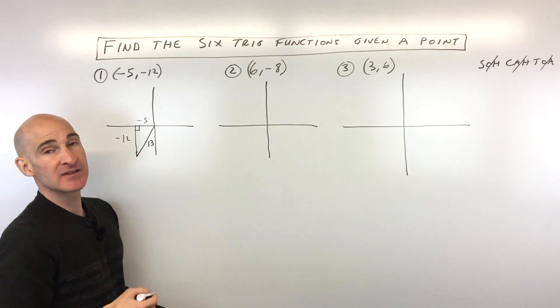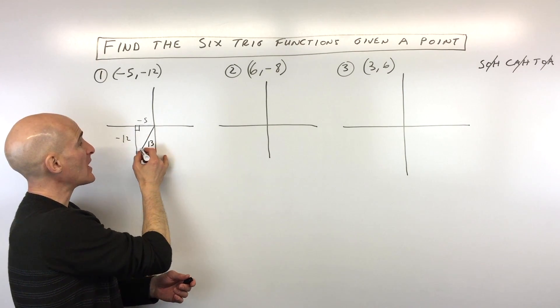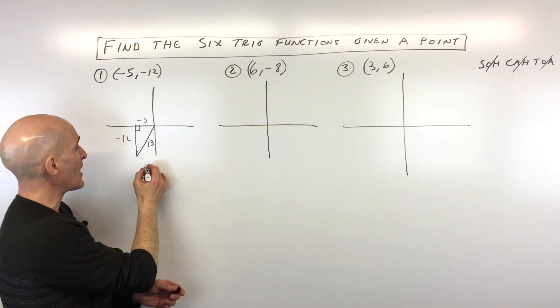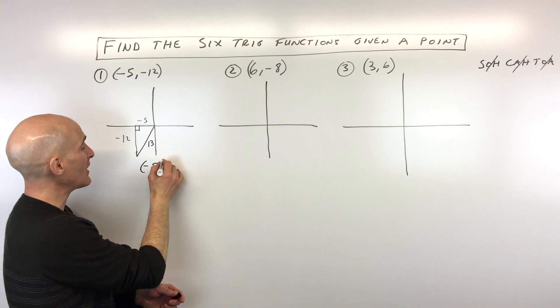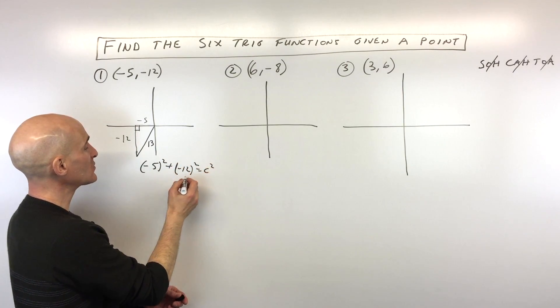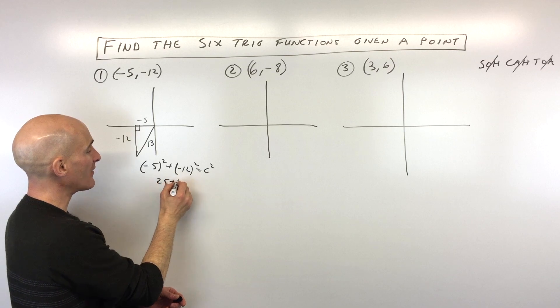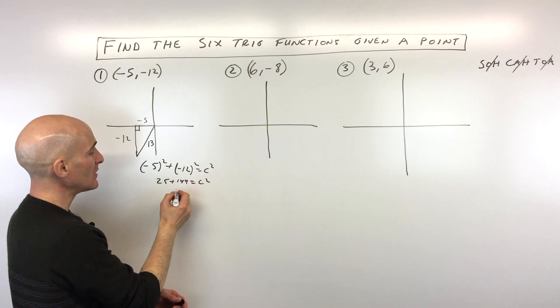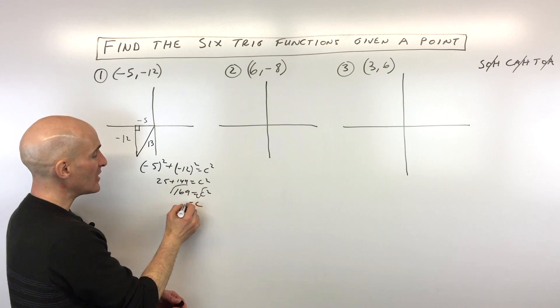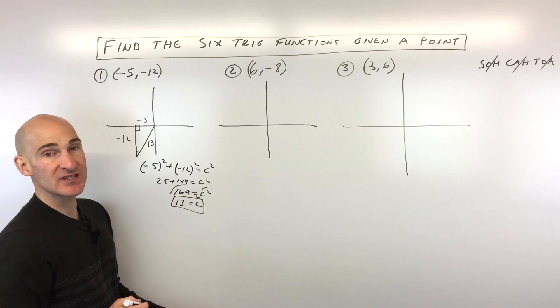Now the hypotenuse here, this radius or ray drawn from the origin, is always going to be positive. So again, if you're not sure, just go ahead and do the Pythagorean theorem. Negative 5 squared plus negative 12 squared equals c squared. And you're going to see that this is 25 plus 144 equals c squared. 169 equals c squared. Take the square root of both sides, and you can see that c is coming out to 13.